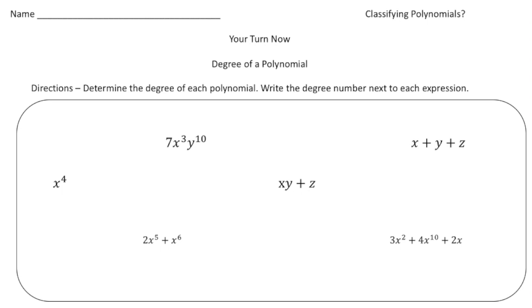Welcome back. Let's see how I do these problems. So x to the fourth, that should have been the fourth degree. Here we have a monomial, so we need to add the exponents. So 3 plus 10 would be the 13th degree.